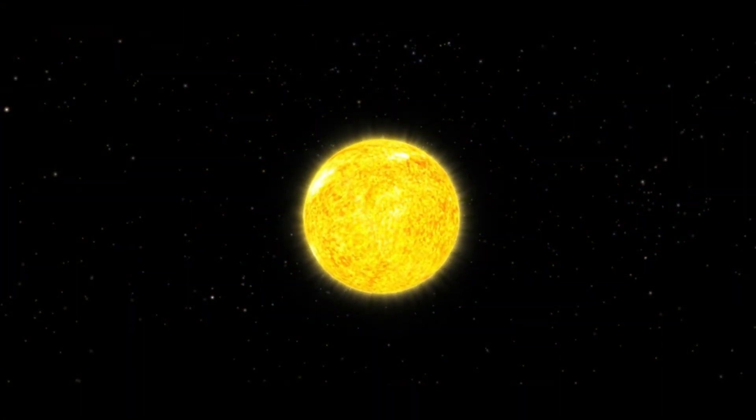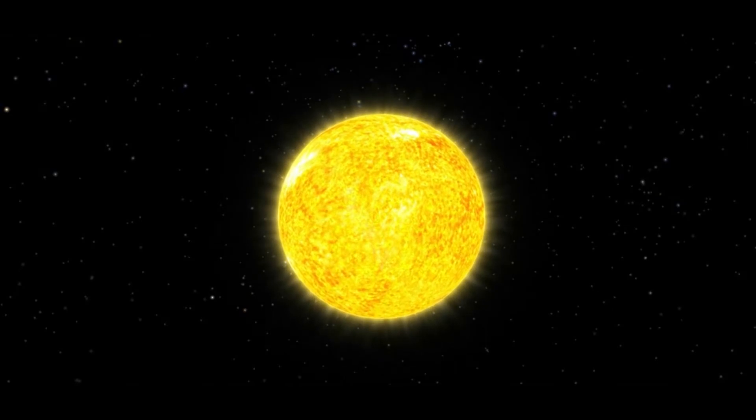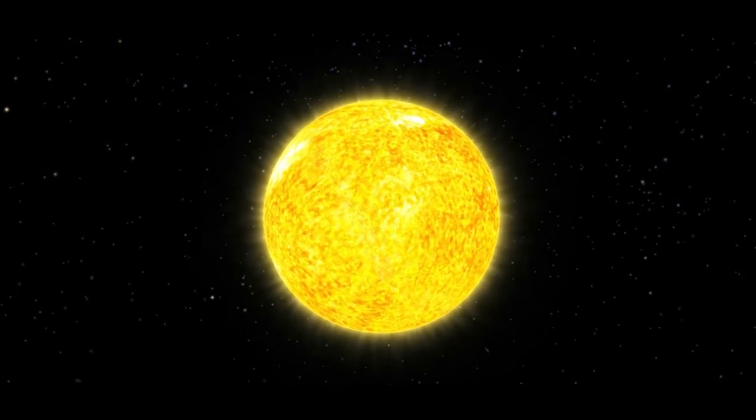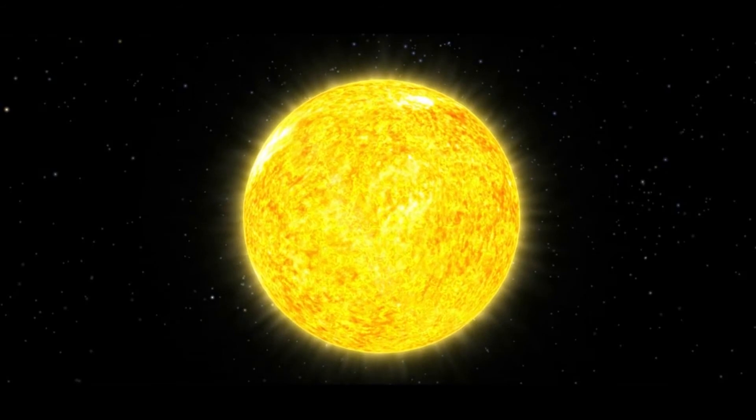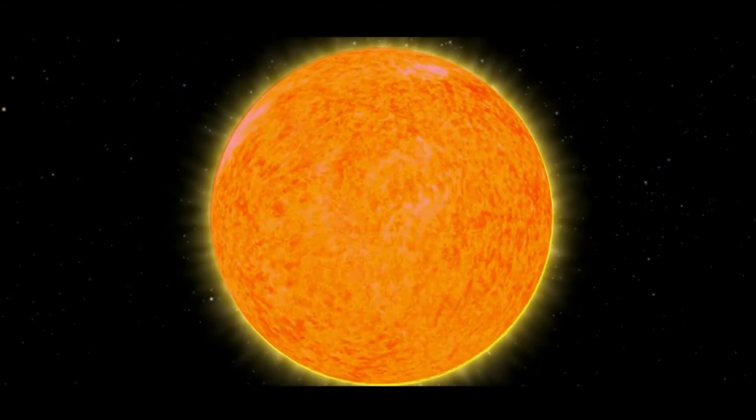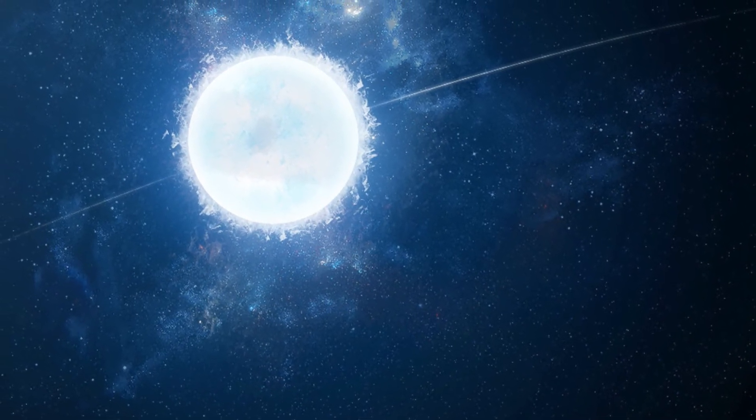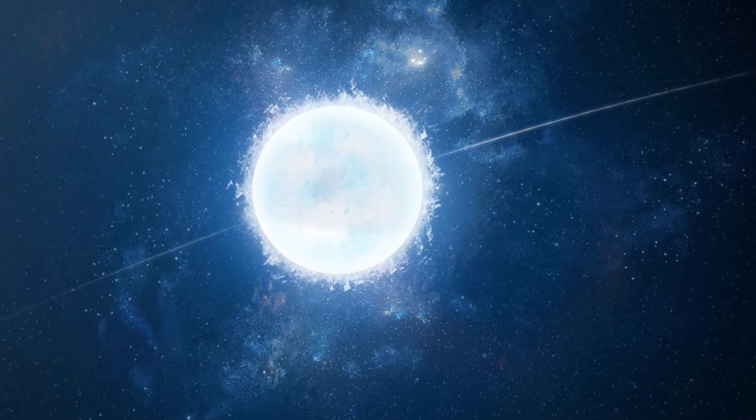As average stars with up to 1.44 solar masses, such as the Sun, run out of hydrogen to fuse in their cores, they swell into red giant stars before shedding their outer layers. The remnant left behind in this planetary nebula is a white dwarf star.